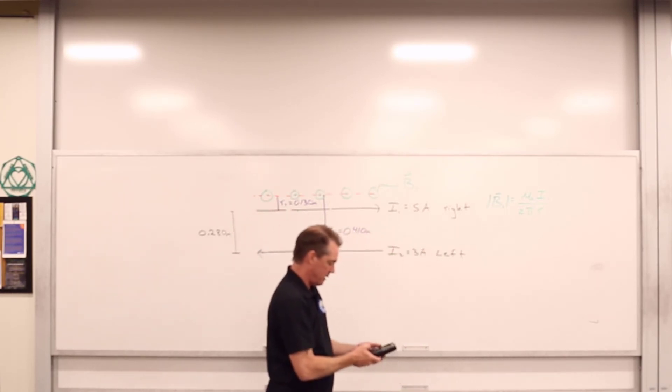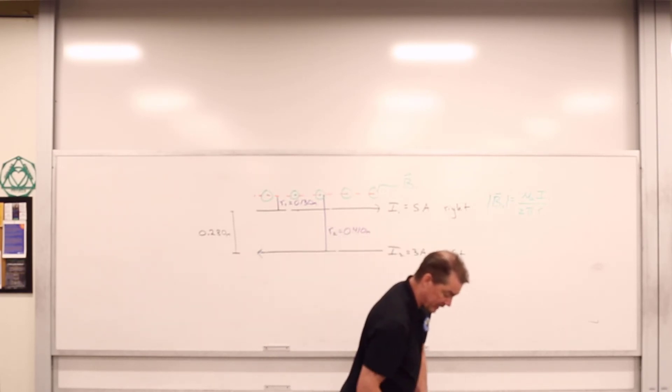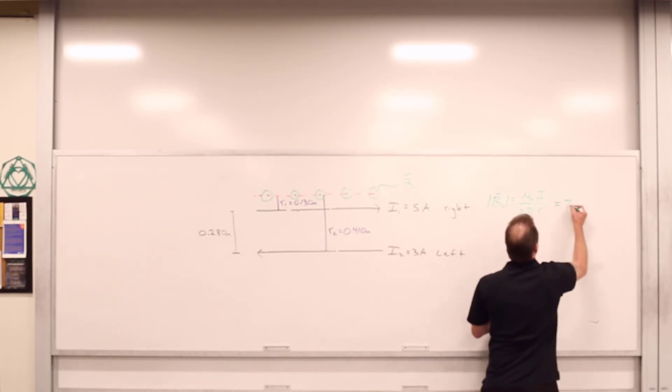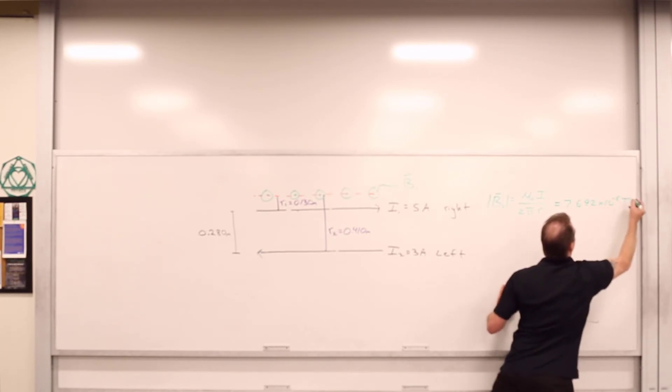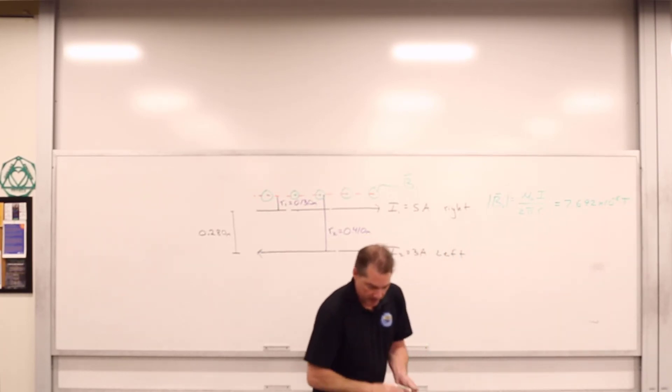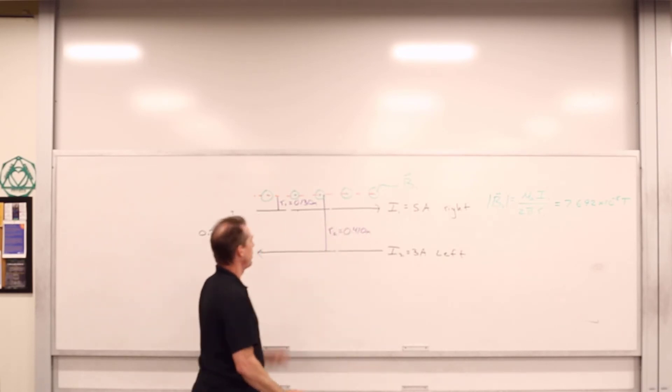And let me just go ahead and stick that in. Alright, 7.692 times 10 to the negative 6, 7.692 times 10 to the negative 6 Tesla. And then we move over to current carrying wire number two.